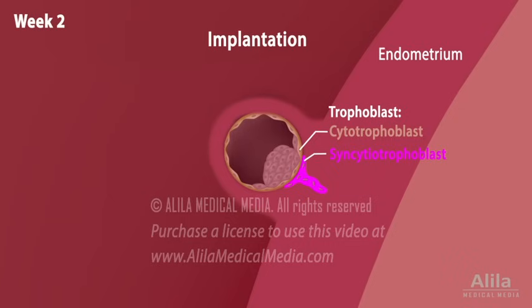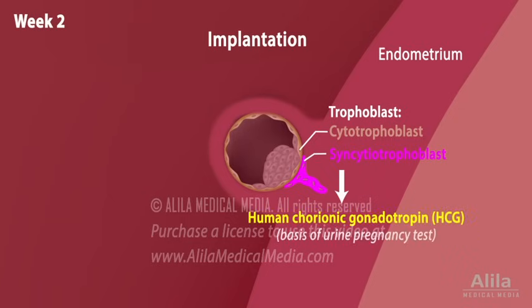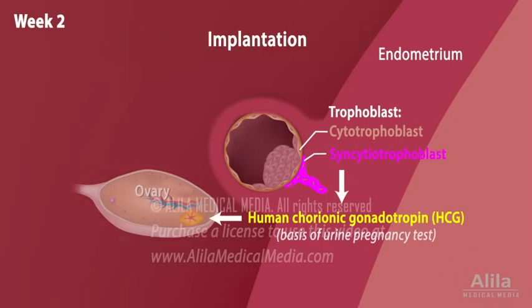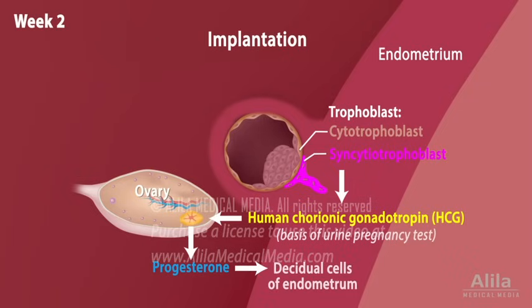The syncytiotrophoblast secretes the hormone human chorionic gonadotropin, HCG, to instruct the corpus luteum to continue the production of progesterone. Progesterone is the hormone that maintains pregnancy. Among its many functions, progesterone stimulates the growth of nutrient-rich decidual cells to feed the early embryo.